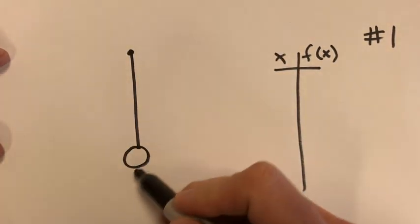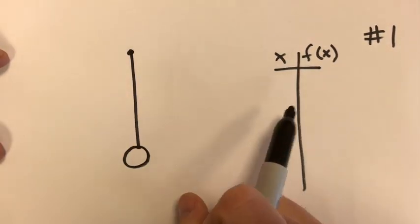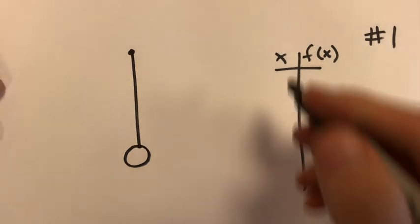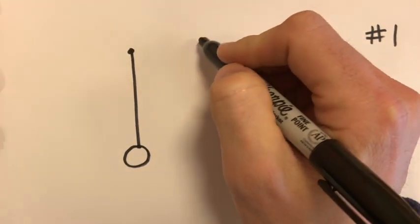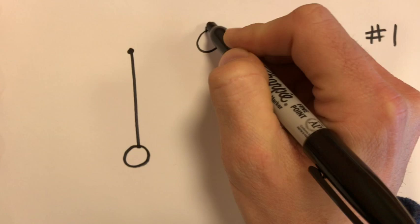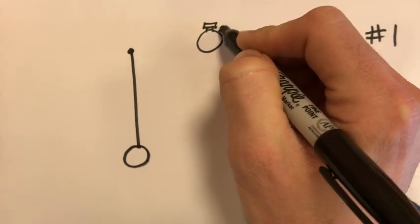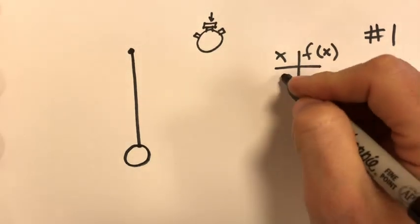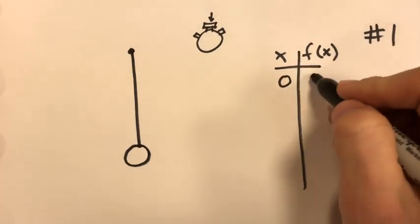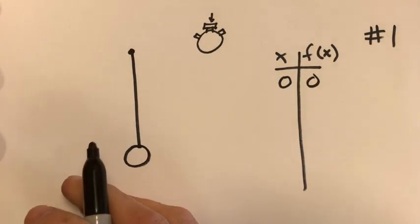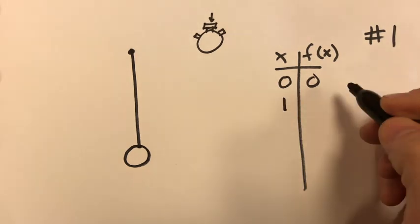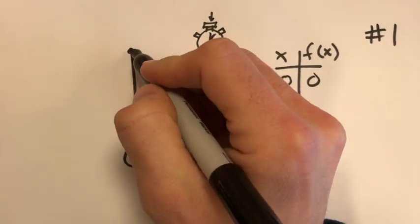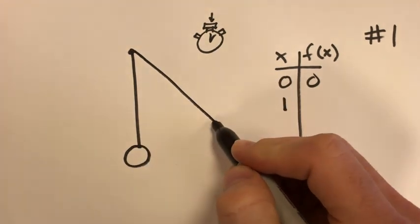In this example we've got a pendulum that's going to be swinging, and the input variable x is going to be time in seconds. We've got our stopwatch, we're going to start that stopwatch, and at zero seconds the angle is zero degrees. Then at one second, so one second has passed, that pendulum has swung up to here, 42 degrees.